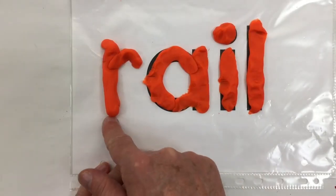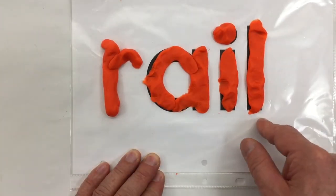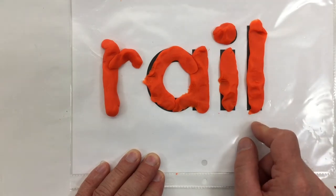If I make this into the letter R, I've got 'rail'—like railway tracks that a train travels on, the rail.